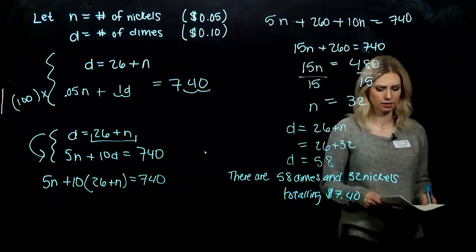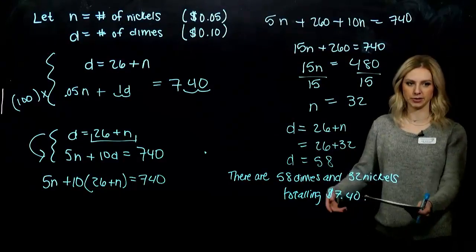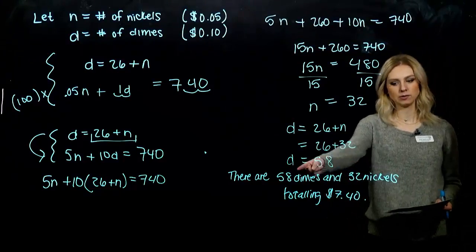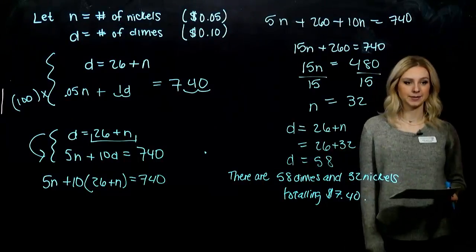Altogether there are 58 dimes and 32 nickels totaling $7.40. If you think you made a mistake, go ahead and plug the numbers back in. If I have 32 nickels and 58 dimes, how much money do I have in total? And do we really have that relationship between the dimes and the nickels?